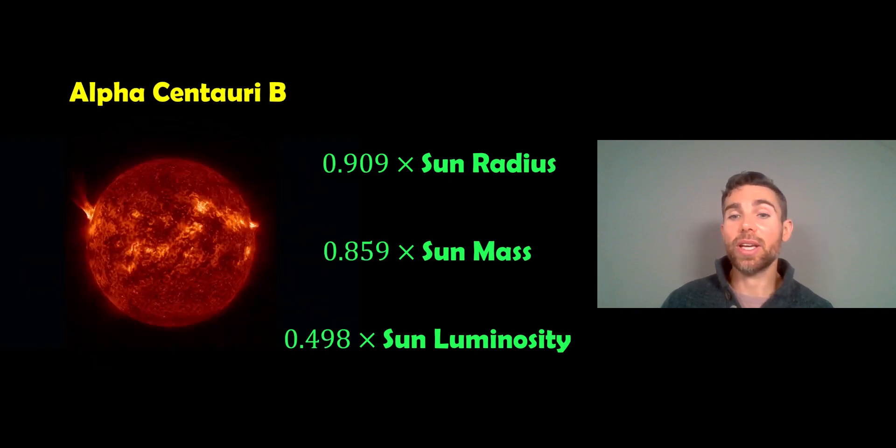And then Alpha Centauri B is a little bit smaller. So it's a little bit smaller than the sun. It's about 0.9 times the radius of the sun, and just slightly less in mass-wise. So about 0.86 or 0.859 times the mass of the sun.